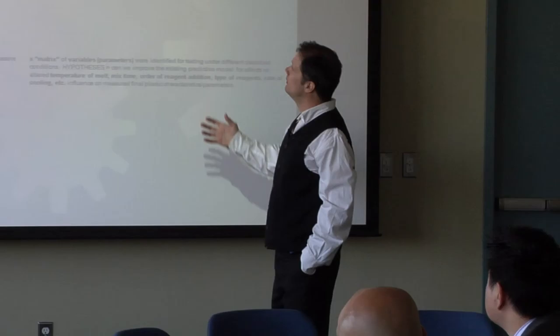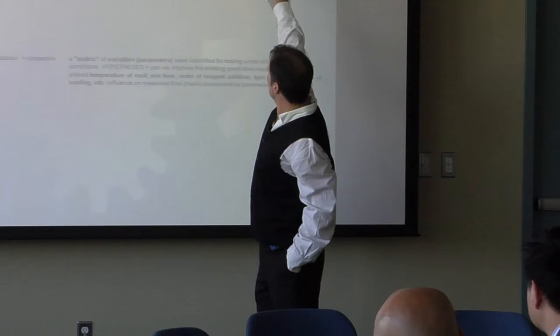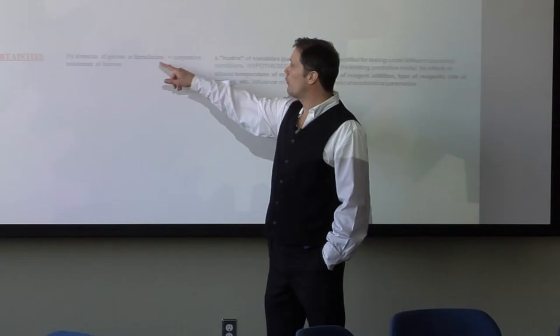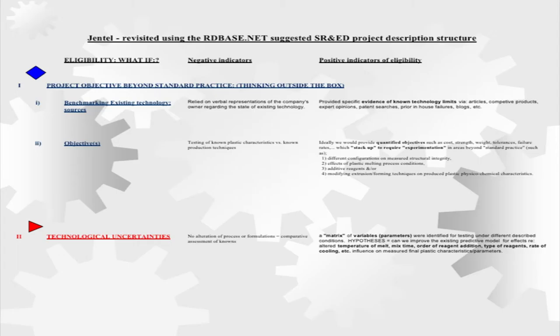On objectives, they described testing known plastic characteristics versus known production techniques — generally vague. Ideal objectives are quantifiable and describe where you're going beyond standard practice: different configurations for structural integrity, effects of different plastics and melting conditions, additives or reagents, modifying extrusion or forming techniques for different plastic chemical characteristics. On uncertainties, they didn't discuss any process formulations or comparatives — they didn't say they took a base formulation and changed it somehow.